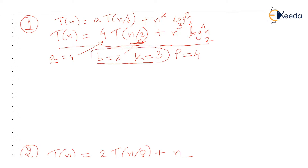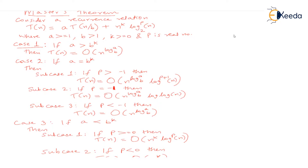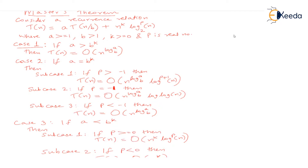Now b raised to k is clearly 2 raised to 3, which is 8, and a is just 4. So we have a less than b raised to k. That means we are in Case 3. Just check what Case 3 says: if a is less than b raised to k, then check the value of p. Sub-case 1: if p is greater than or equal to 0, then T(n) is Big-O of n^k · log^p(n).